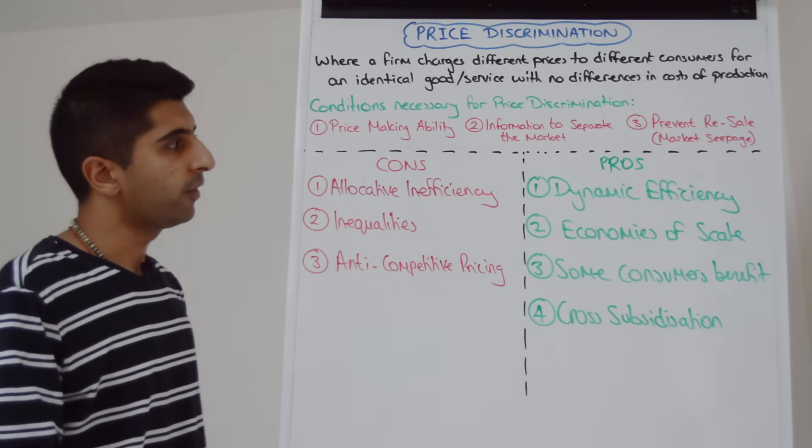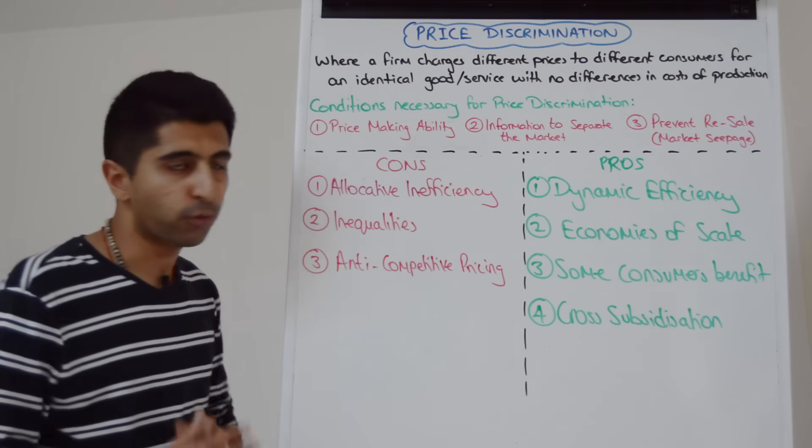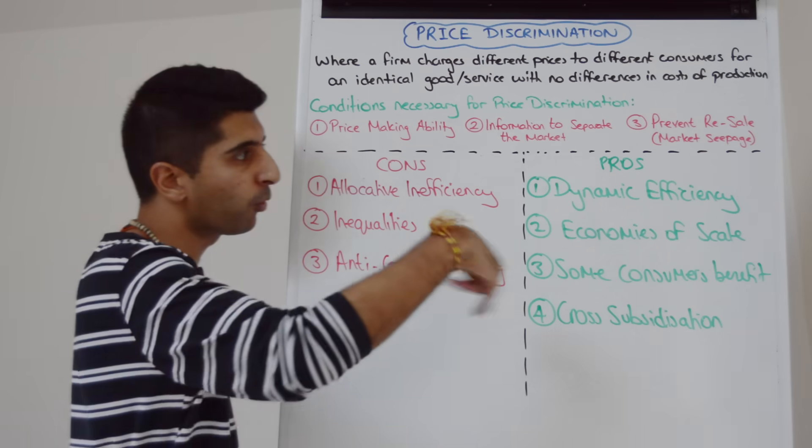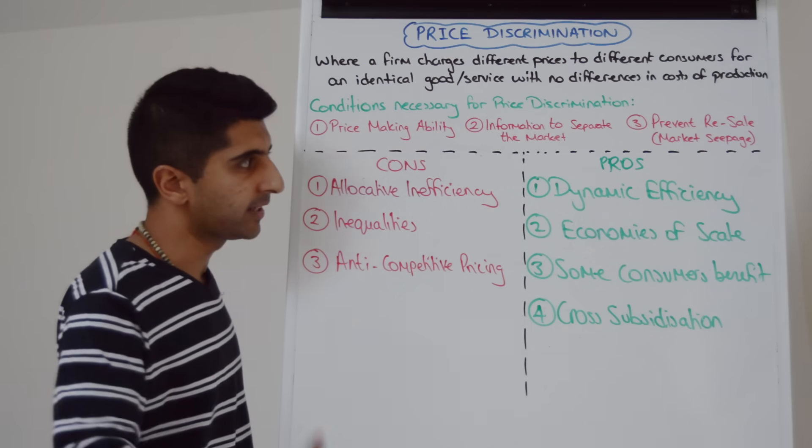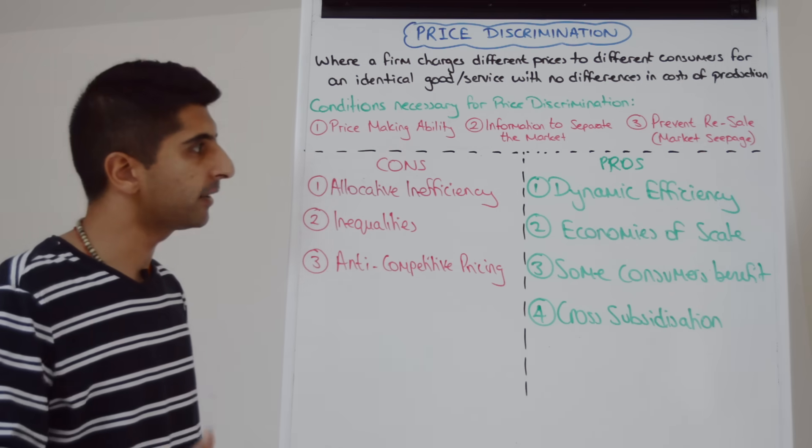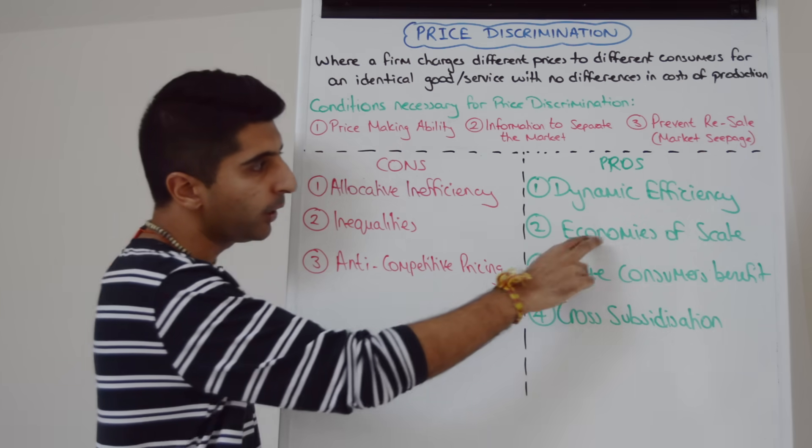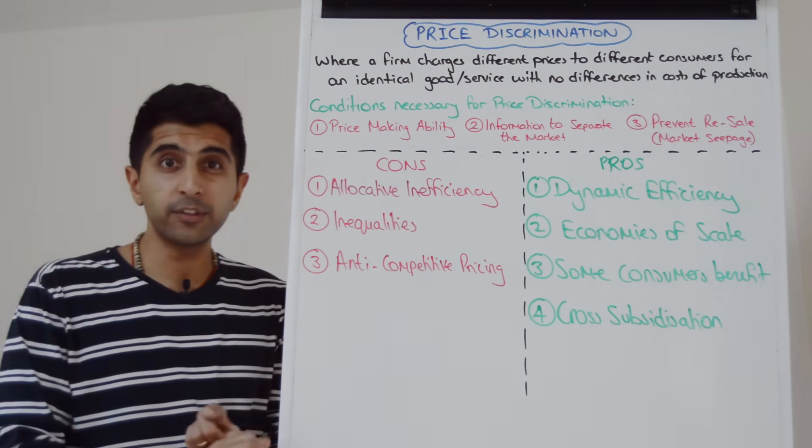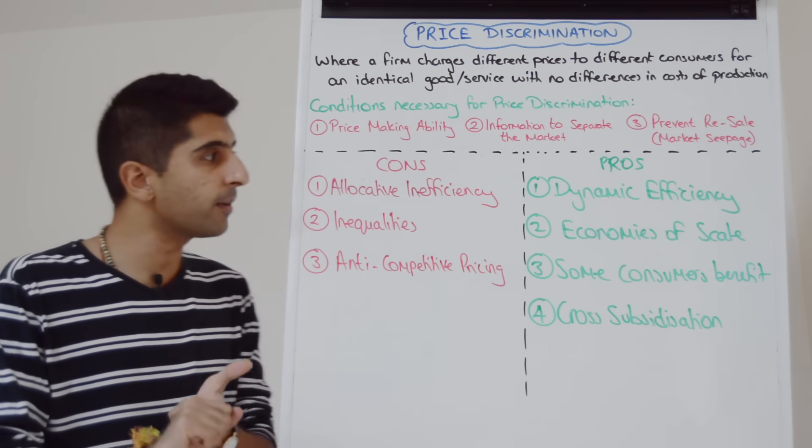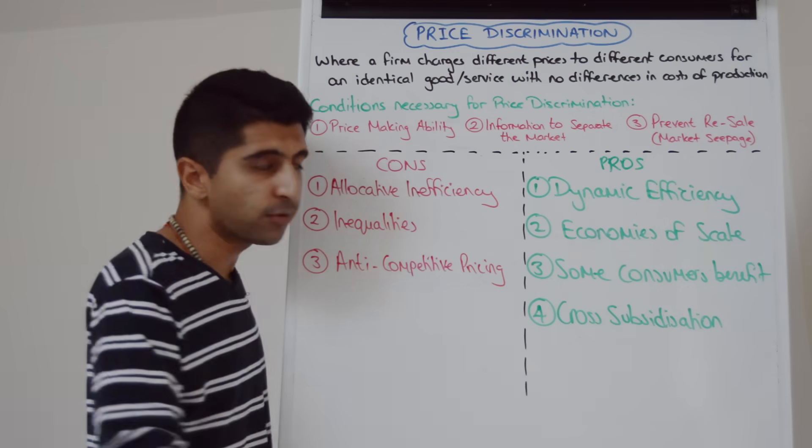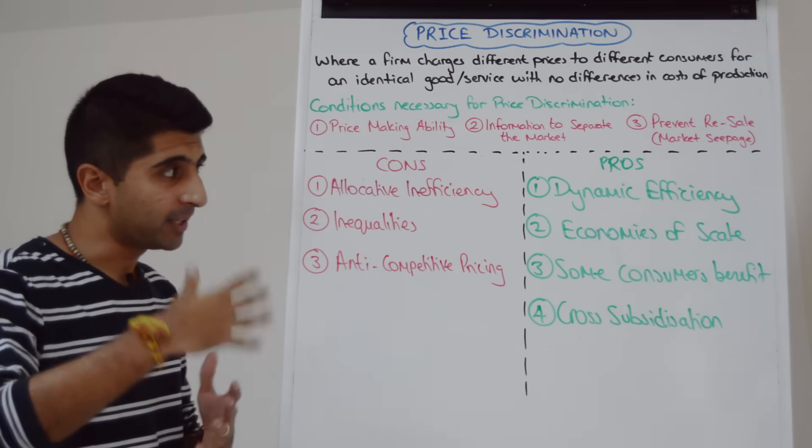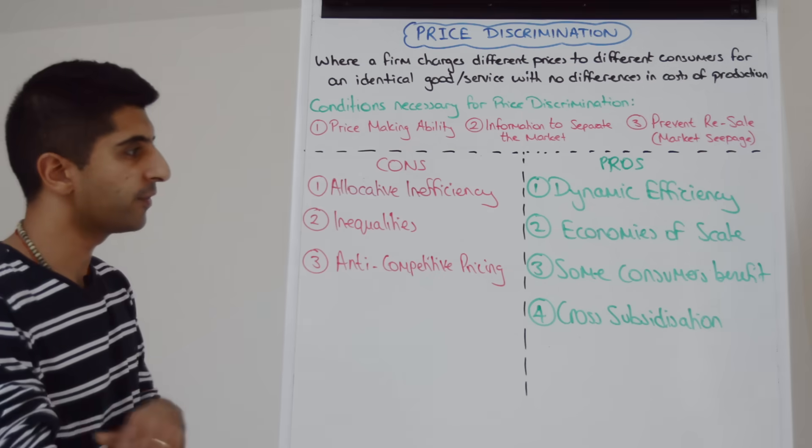There are some pros with price discrimination. We could argue with greater profits made by the firm, there might be more reinvestment potential and greater dynamic efficiency benefits. We know about dynamic efficiency well by now. With greater quantity, think about higher quantity in both second-degree and third-degree price discrimination, there could be greater economies of scale benefits and maybe in the future lower prices to consumers over time.